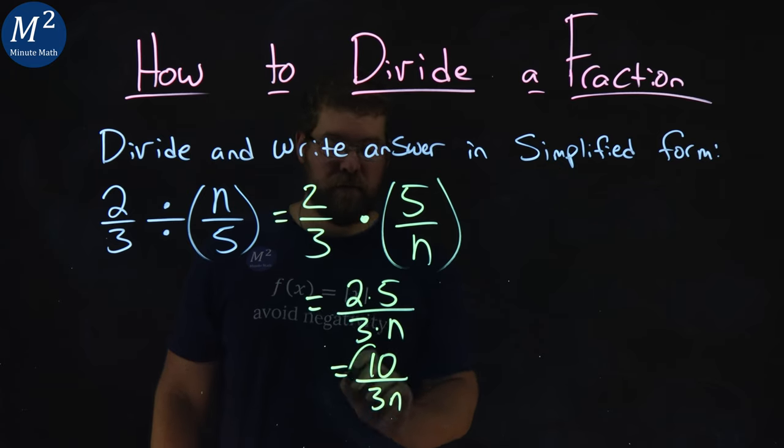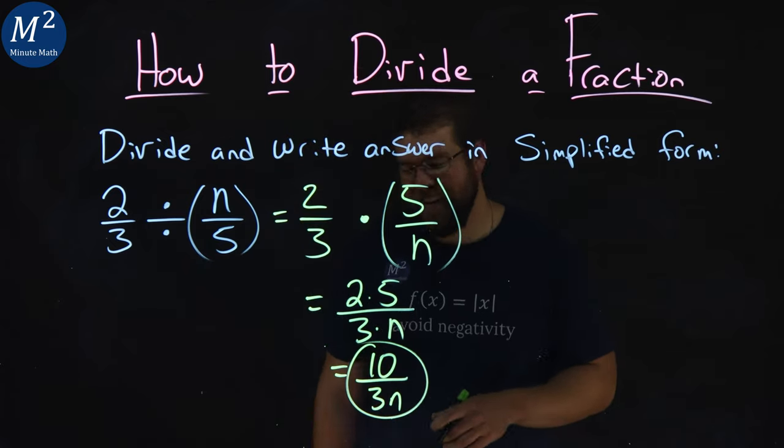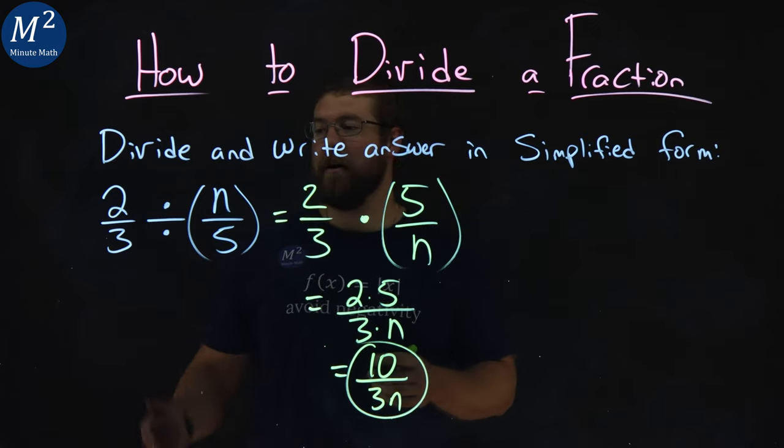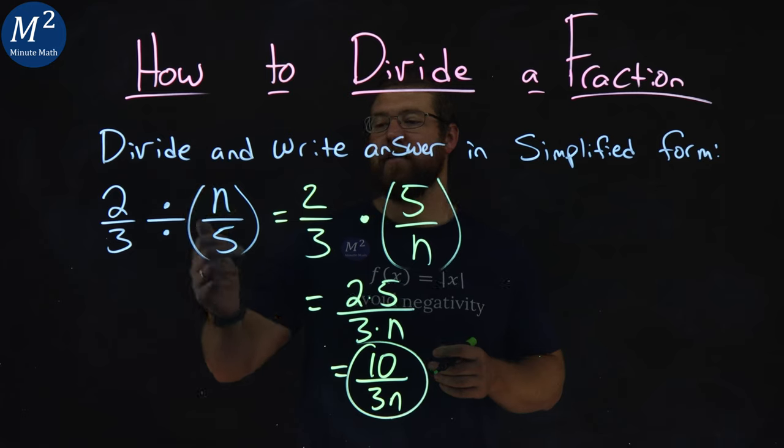And that's it. Ten over three n is the simplified form of two-thirds divided by n over five.